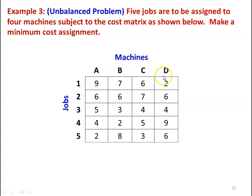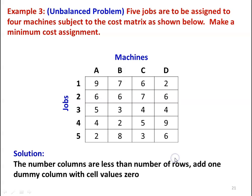There are 4 machines A, B, C, D and 5 jobs 1, 2, 3, 4, 5 and the cell values represent the cost of doing the job on the machine. This is an unbalanced problem. The number of rows are 5 and number of columns are 4.